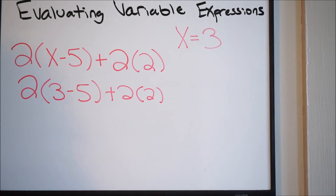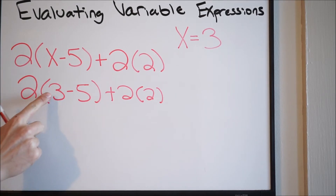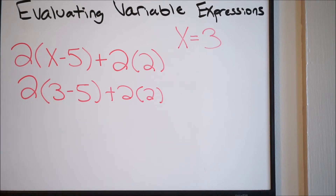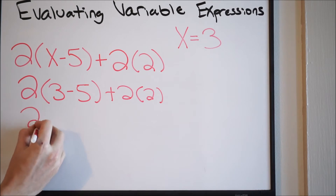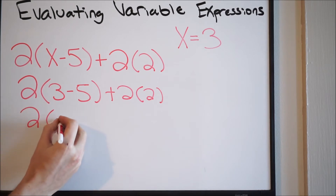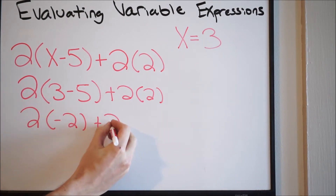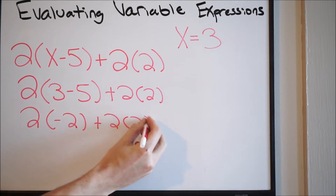At this point, you just want to go ahead and follow your order of operations — PEMDAS. So we're going to use parentheses first. I'm going to work my parentheses here. So I have 3 minus 5, and that's going to give me negative 2. Just rewriting, I have 2 times negative 2, plus 2 times 2.